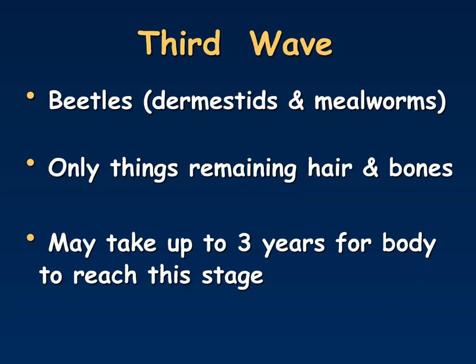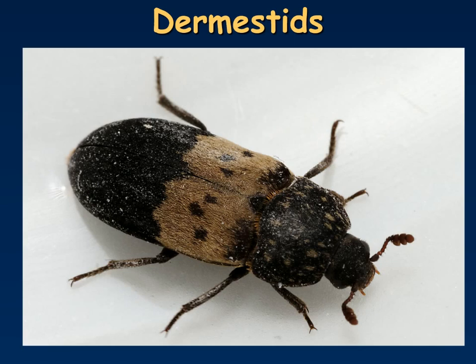Ultimately we will see a third wave of insects moving in. These are primarily going to be beetles such as dermestids and mealworms. At this point, only things remaining of the body are hair and bones, and it may actually take up to three years for the body to reach this stage. Here is an example of one type of dermestid beetle — this particular species is called a larder beetle.